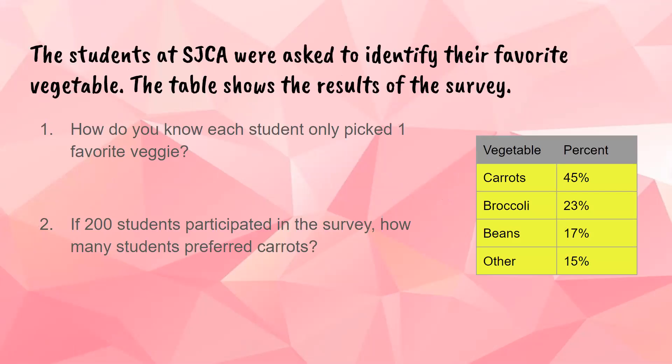So this is our first example that we're going to talk about for a minute, and then we will talk about how to put this information into a circle graph and display that information. It says the students at SJCA were asked to identify their favorite vegetable. The table shows the results of the survey. If you look at the table it has vegetables - carrots, broccoli, beans, and other - and then the percent of students that answered for each. Number one asks how do you know each student only picked one favorite vegetable?